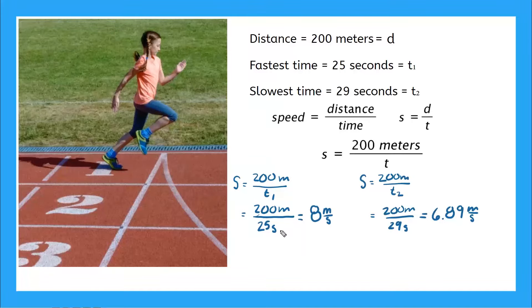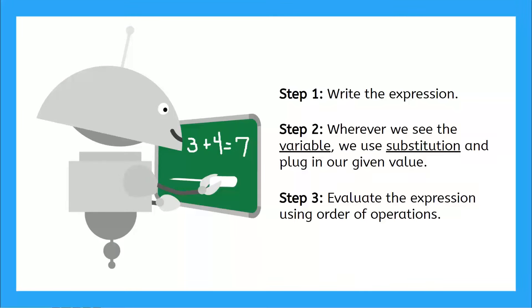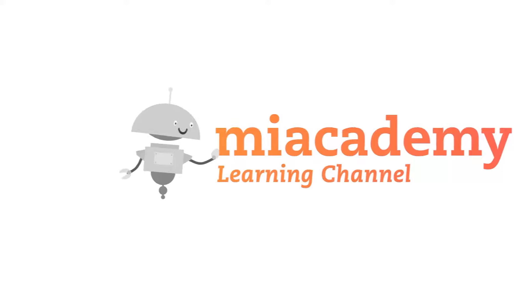Here we used those same three steps to evaluate an expression with one variable t — when t was 25 seconds and when t was 29 seconds. Great work! Now you're ready to practice evaluating expressions with one variable on your own. Use those three simple steps to help you out. Have fun, and remember to always be clever!